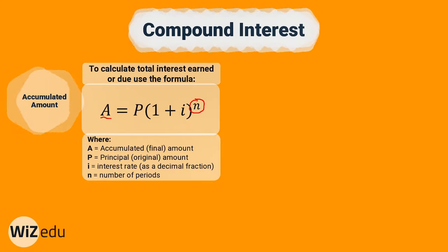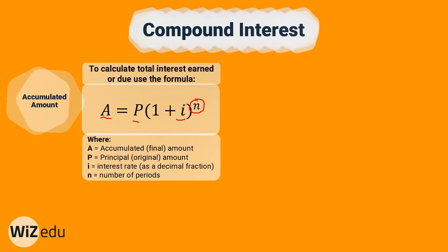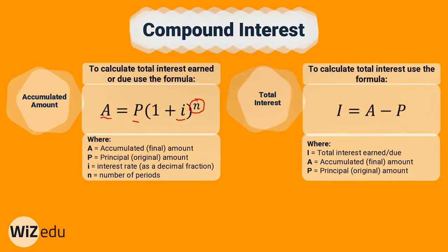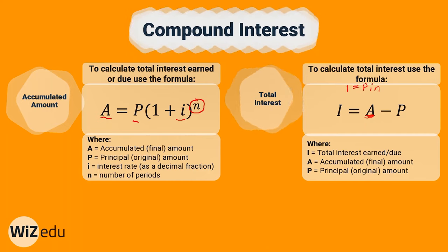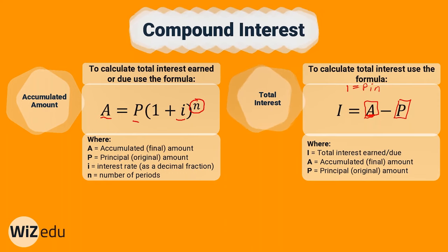So n is now an exponent rather than inside the bracket, and that represents the exponential growth of money with compound interest. A is our accumulated or final amount, P is our principal or original amount, i is our interest rate as a fraction, and n is our number of time periods or years. To calculate the amount of interest earned with compound interest, you use I equals A minus P — you must calculate your accumulated amount A first, then subtract the principal to find how much your money has grown.